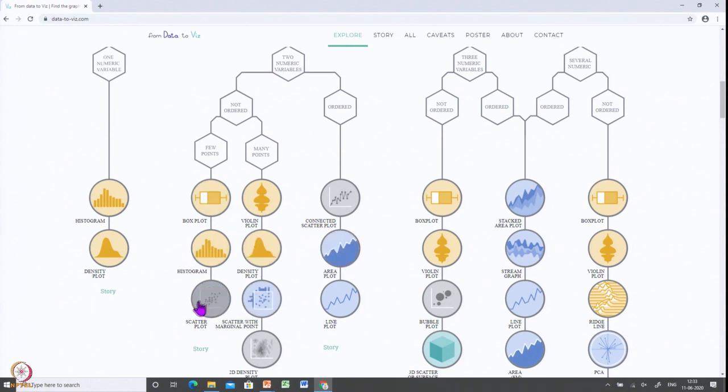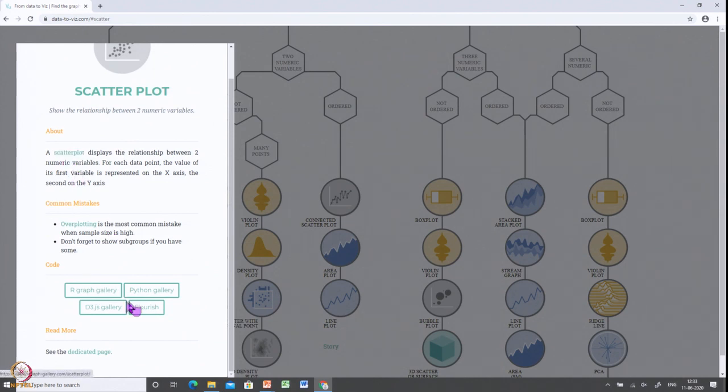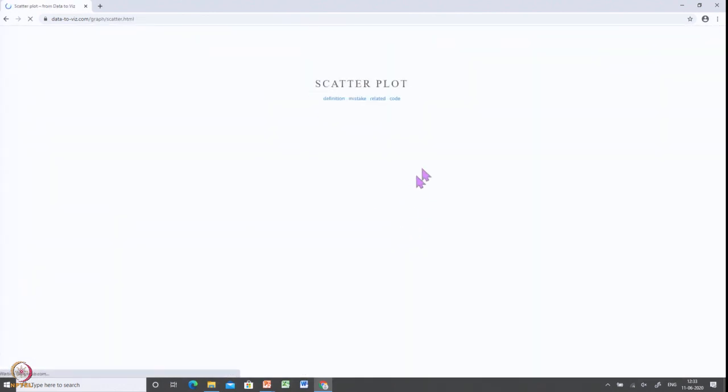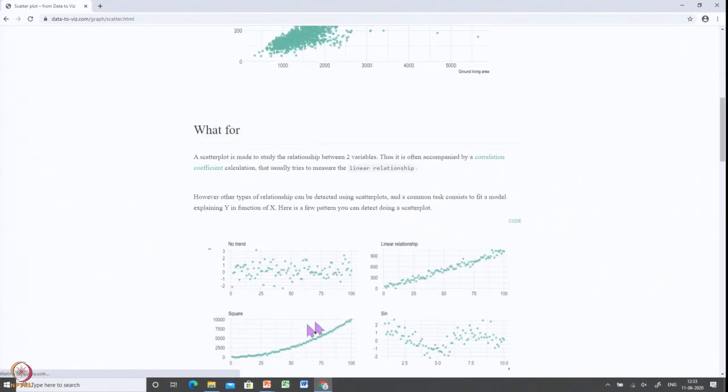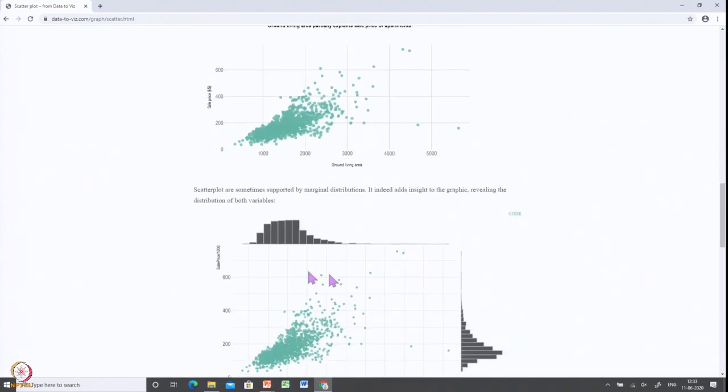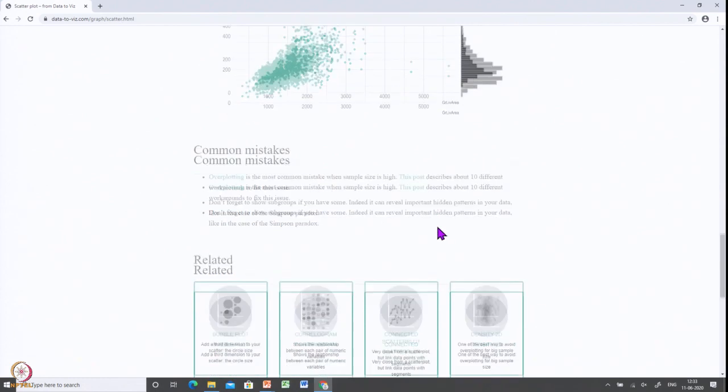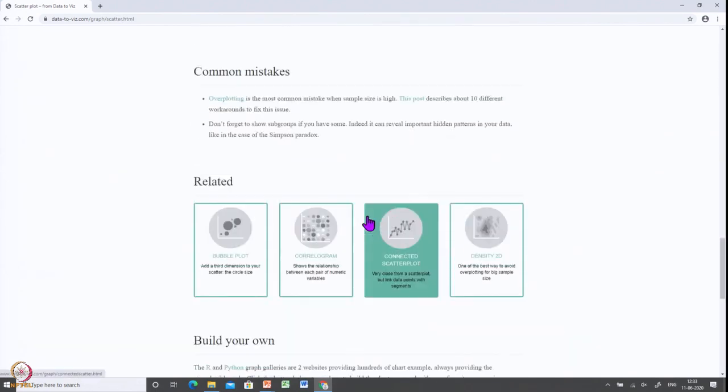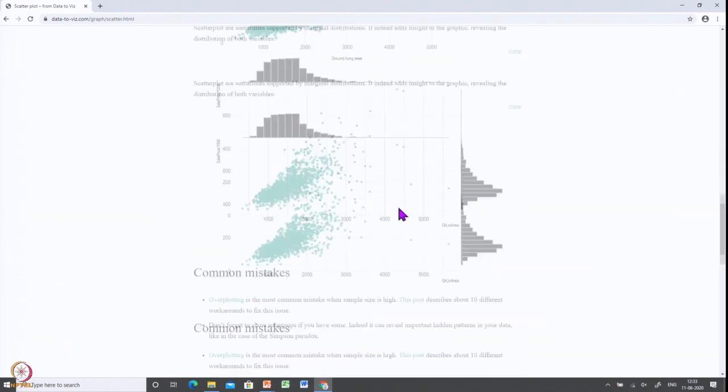For example, if I select scatter plot, it tells about scatter plot in a pop-up. Let us go and see what is scatter plot. It gives you the scatter plot and what it is used for, and there are different variations of scatter plot. And there is a variation of scatter plot with histogram, and what are the mistakes people make when you use the scatter plot.